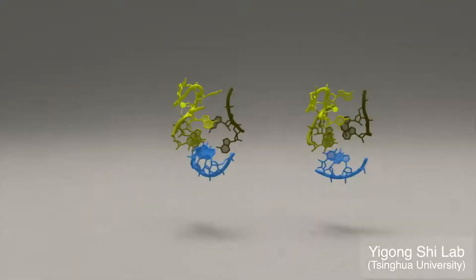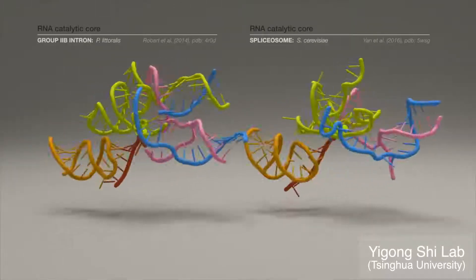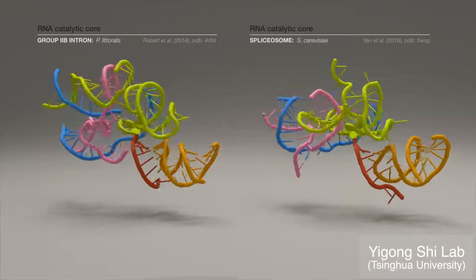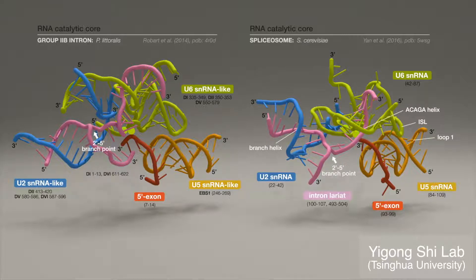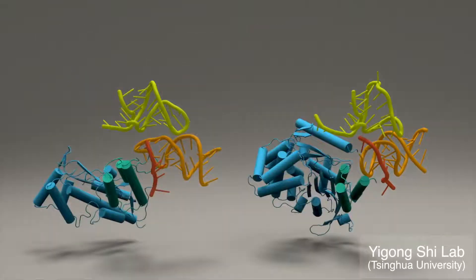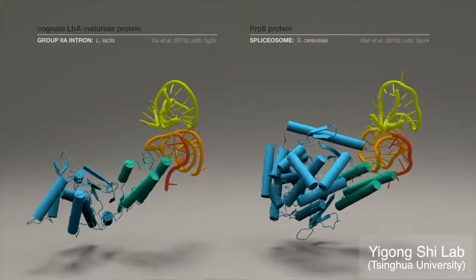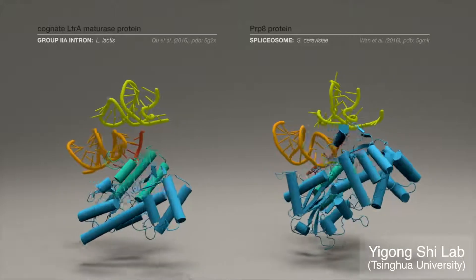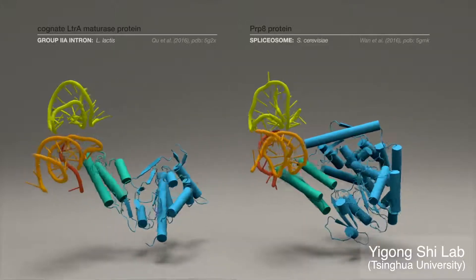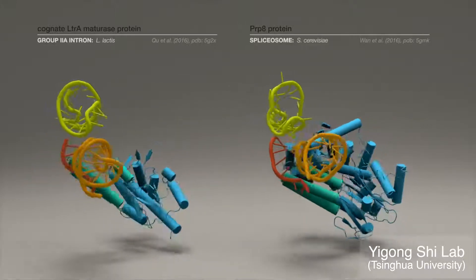Molecular organization of RNA elements in the catalytic core, during reaction chemistry and formation of the lariat 2-5 phosphodiester bond, reflects mechanistic similarities in splicing. Group 2 introns can encode a maturase protein with a domain architecture similar to PRP8, pointing also to common evolutionary origin.